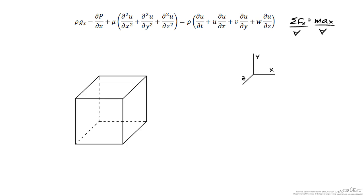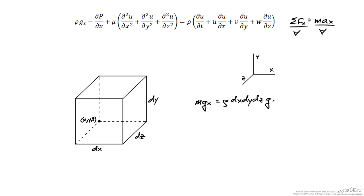Let's examine the forces acting on the differential element more carefully. We'll call this point x, y, z, and the element has lengths dx, height dy, and depth dz. The first force we consider is gravity. In a general case, a component of gravity could act in the x direction. The force due to gravity is the mass of the element times the x component of gravity, where mass equals density times volume (dx dy dz).